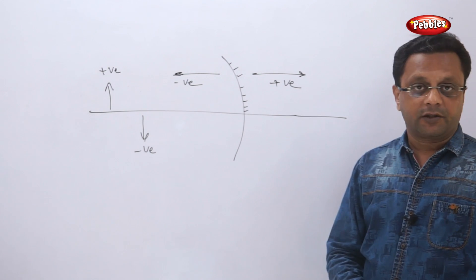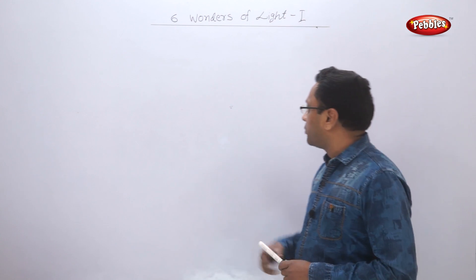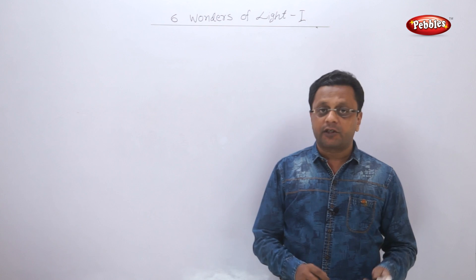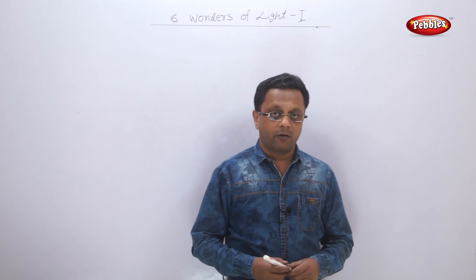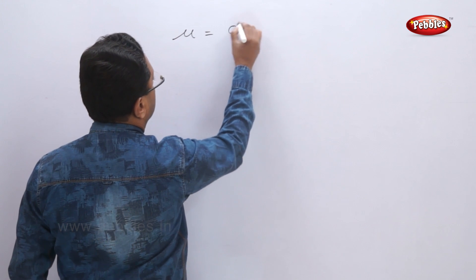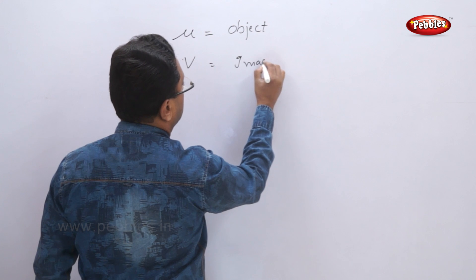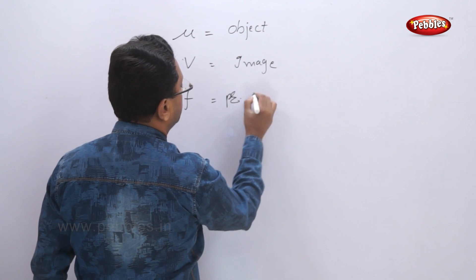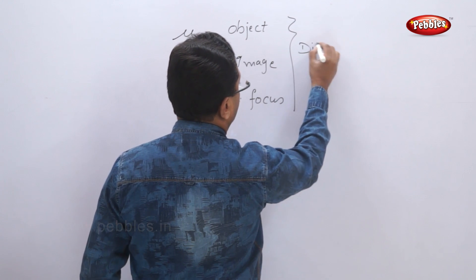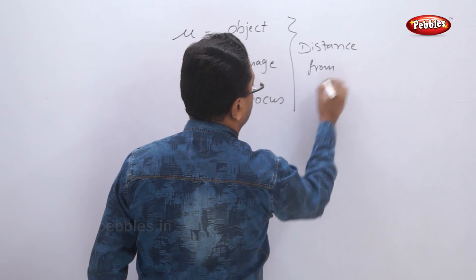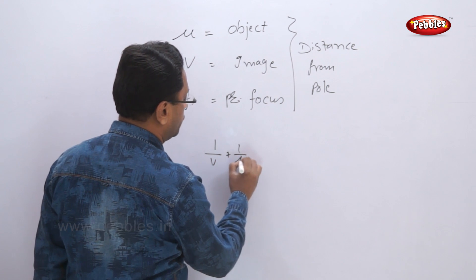Now let us see two formulas: the mirror formula and the magnification formula. The mirror formula says that whenever you measure the distance of the object, image, and principal focus, if any two are given the rest can be found. U is the object distance, V is the image distance, and F is the principal focus. All three are measured from the pole. The formula is: 1 upon V plus 1 upon U is equal to 1 upon F.